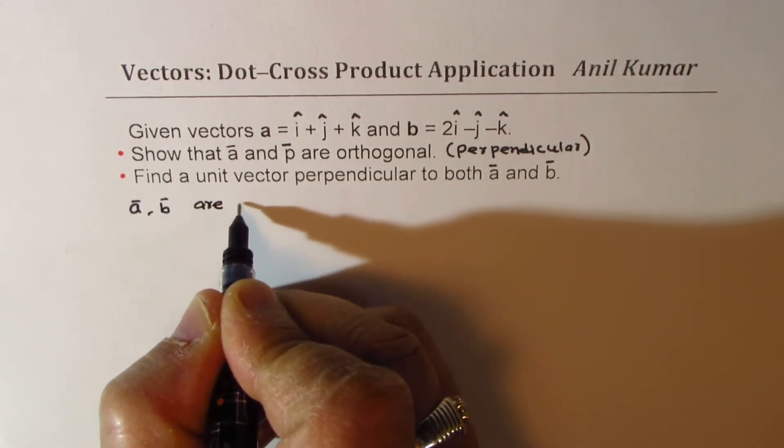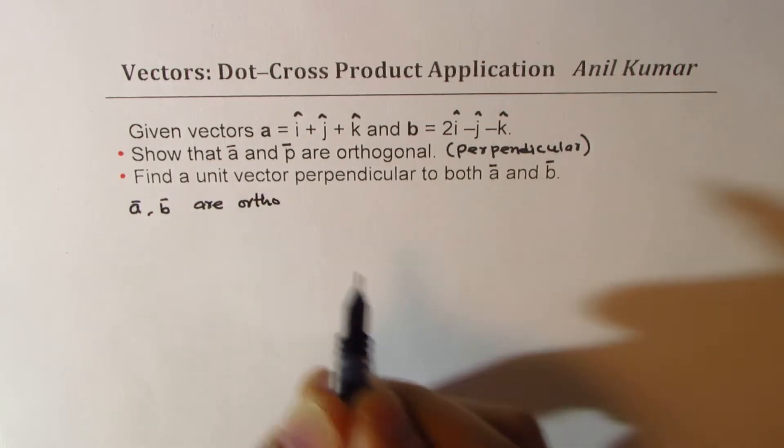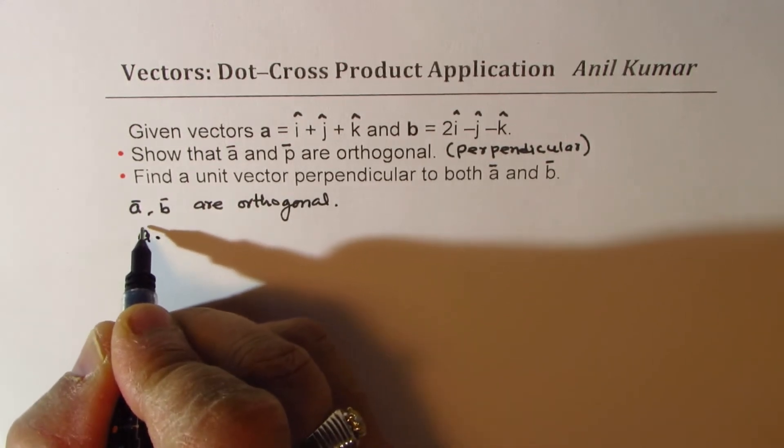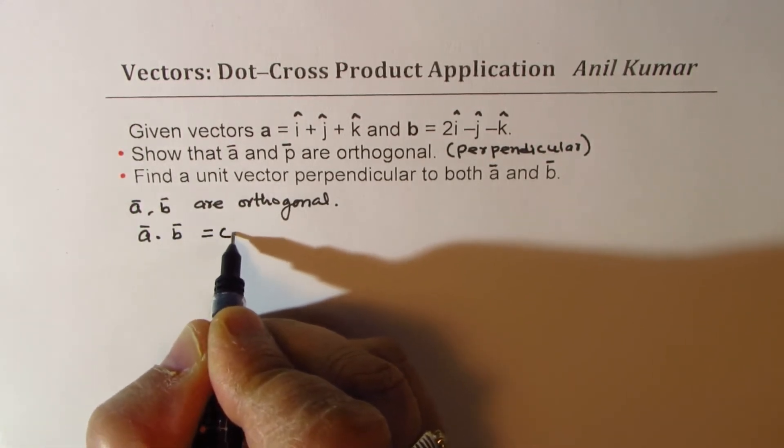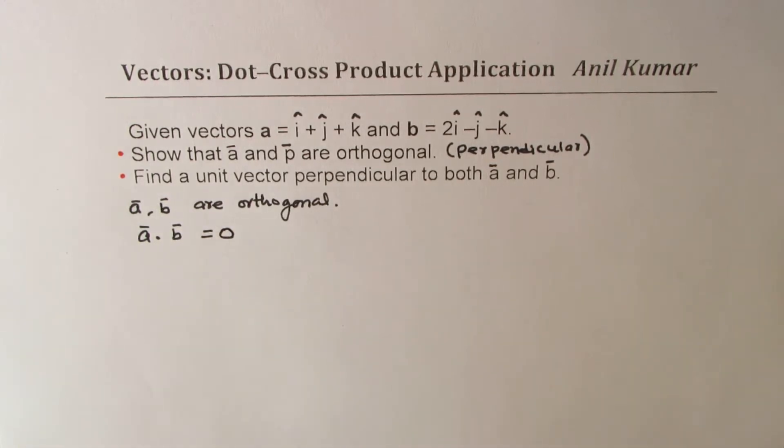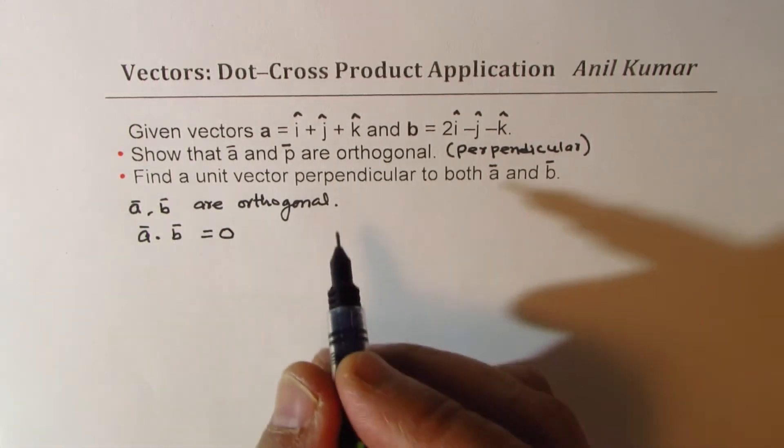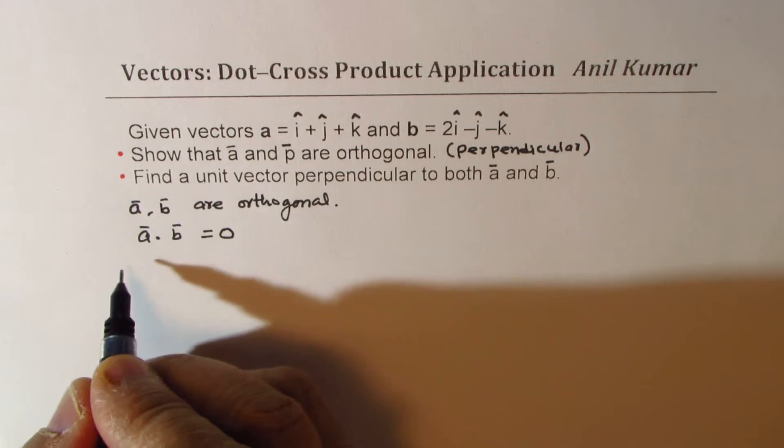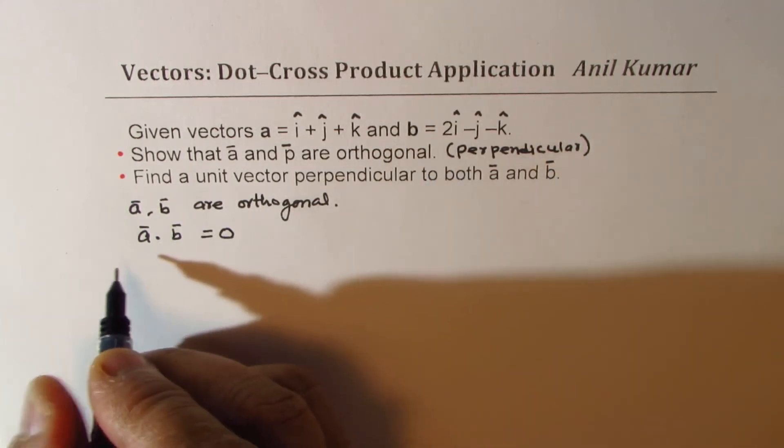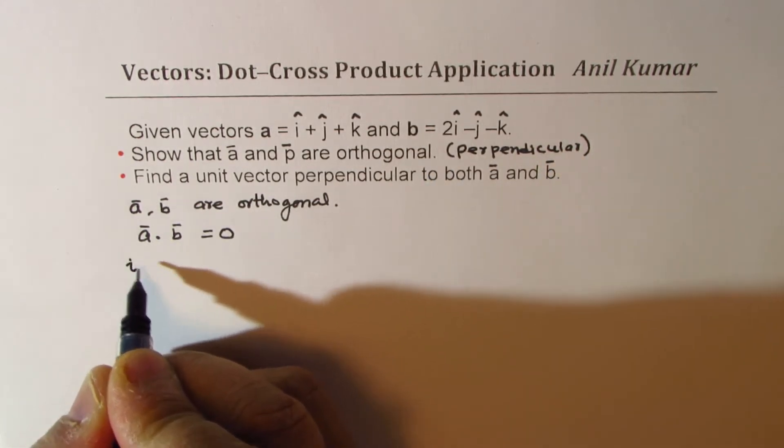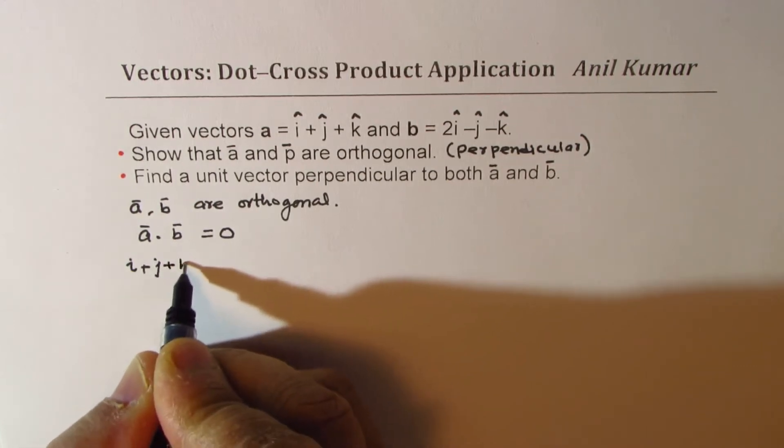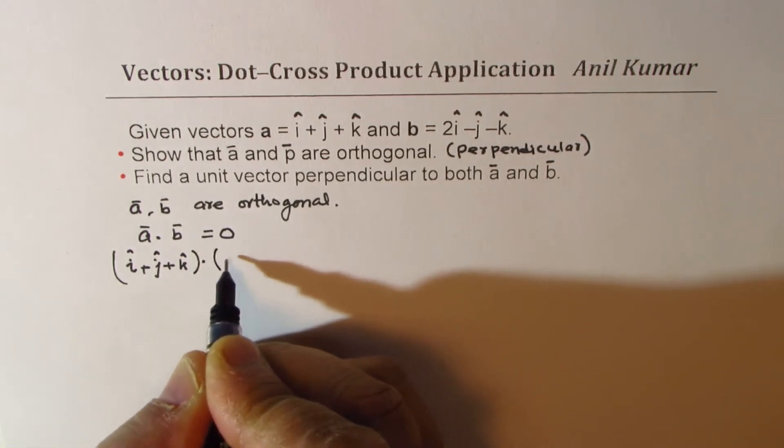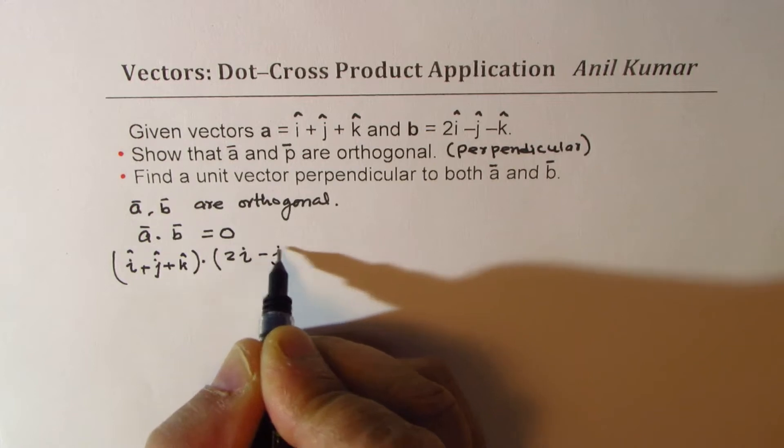Now in part a where we want to show that vector a and vector b are orthogonal, it means they are perpendicular. Their dot product should be zero. That is it. So if you could show that a dot b is zero, that means they are perpendicular.